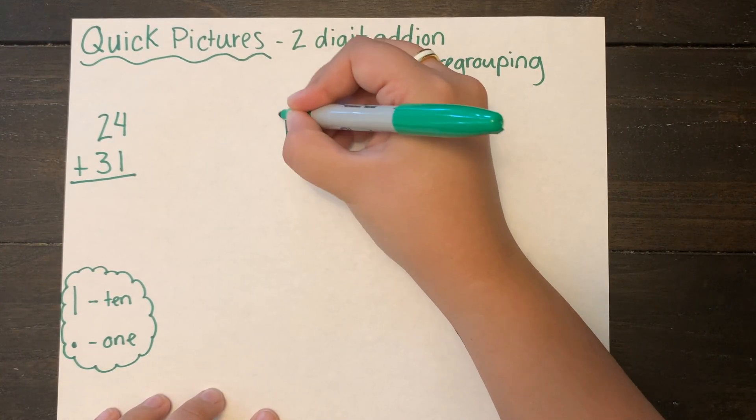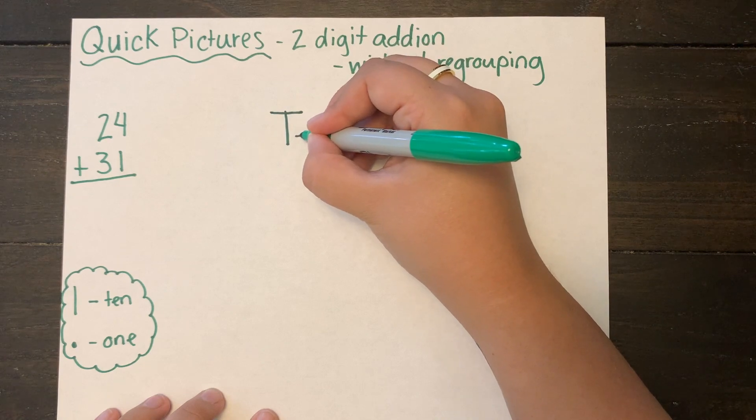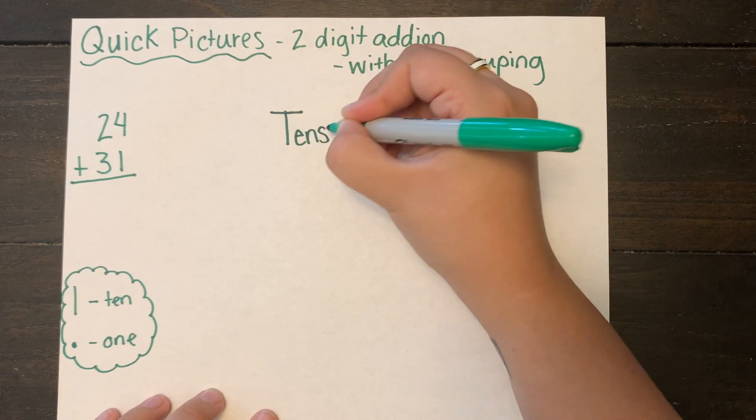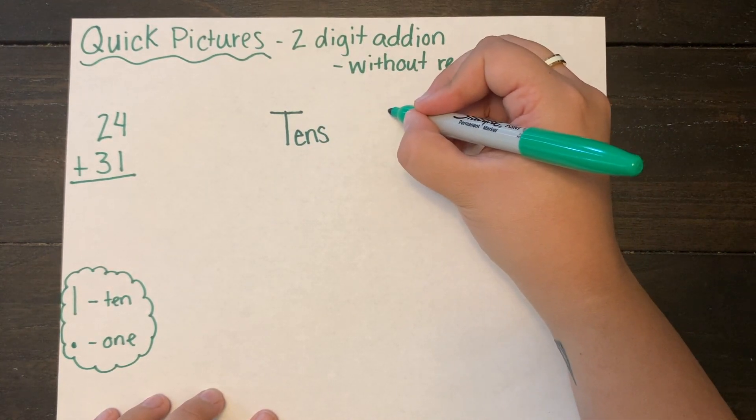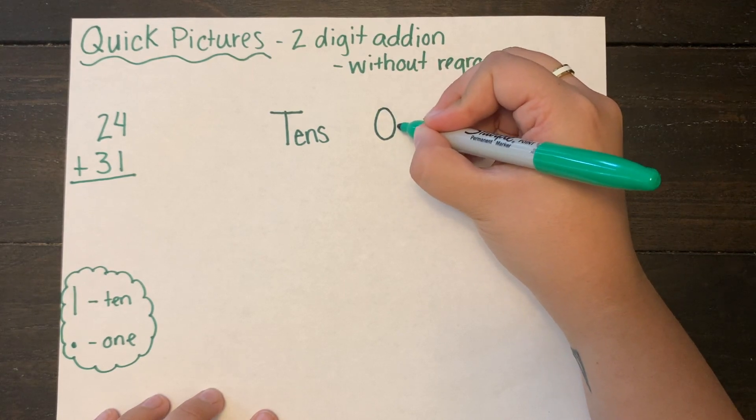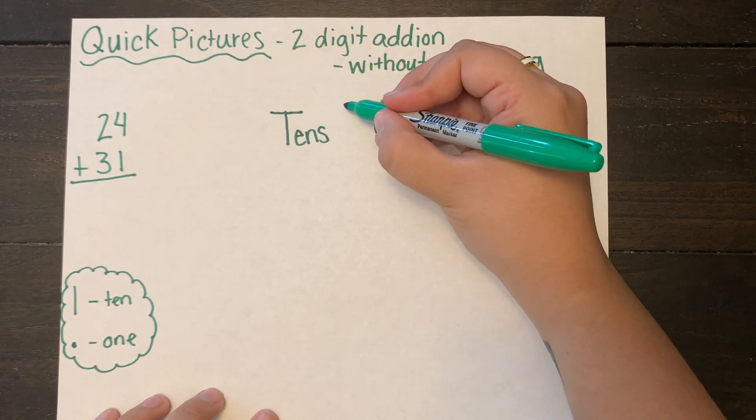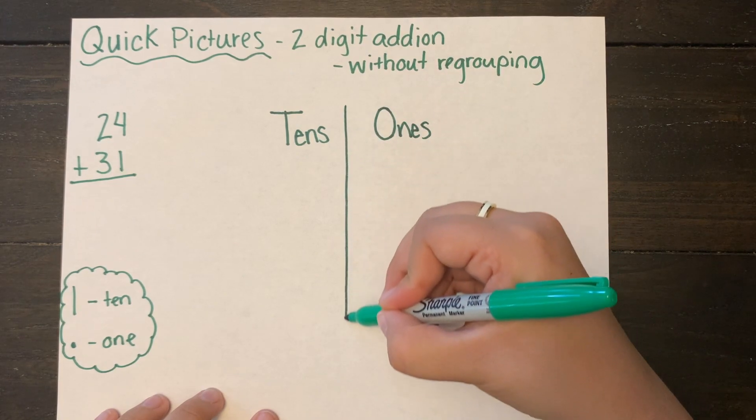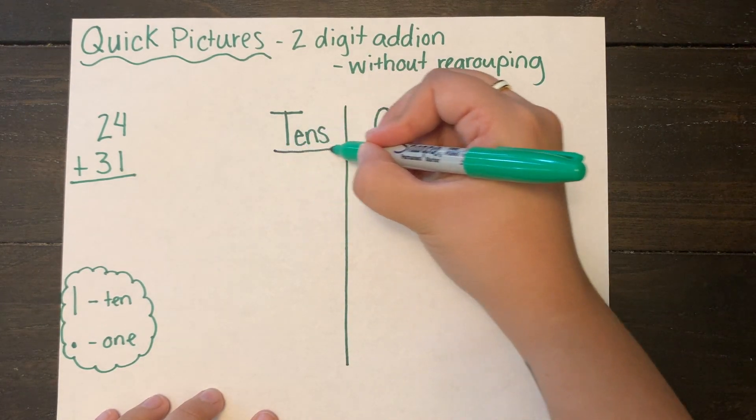First we're going to draw a t-chart. This t-chart on the left says tens and on the right says ones. This is also something called a place value chart, and it's just a way to organize my pictures.